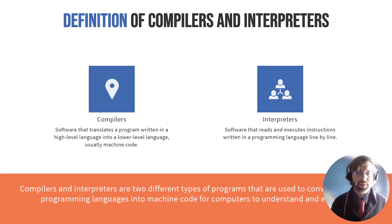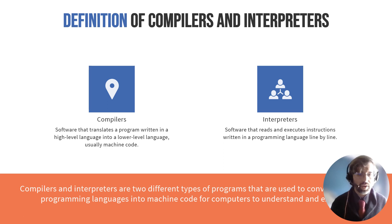If you were to go on your computer, right-click and say view file, you'd see .exe — that's an executable file. It is a program that has been compiled.